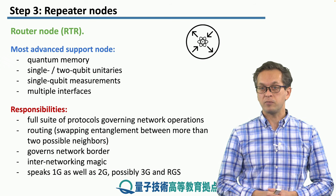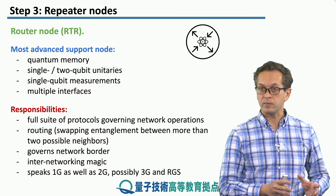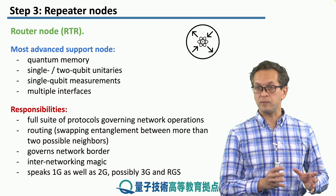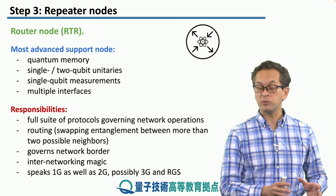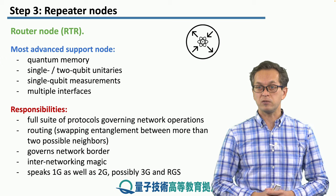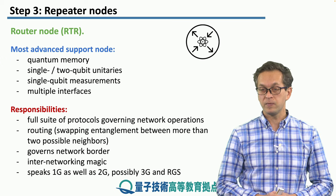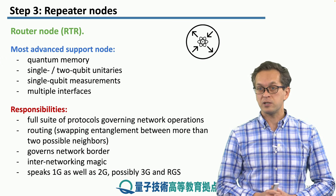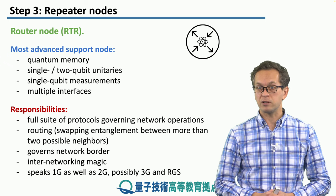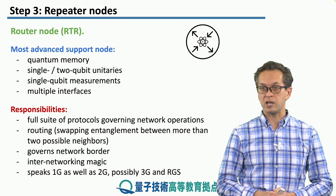3G is another form of quantum error correction where the information is encoded into a quantum error correcting code and sent as one state — it doesn't use teleportation to communicate information. RGS stands for repeater graph states, which were covered in our link architecture lesson on various types of links.